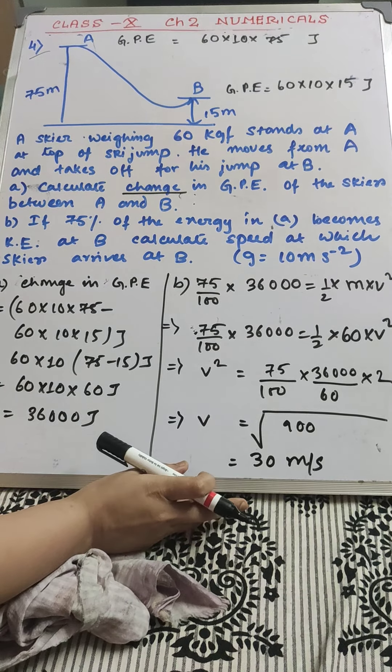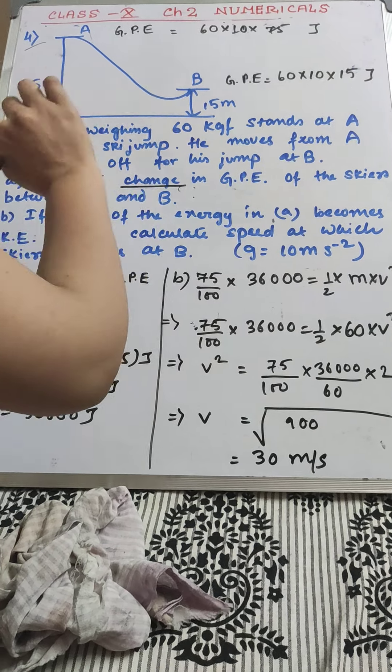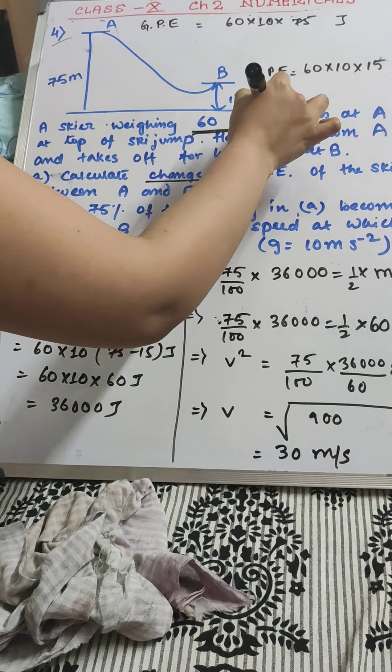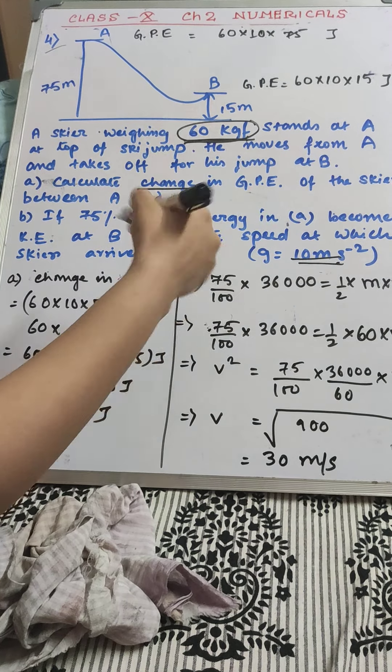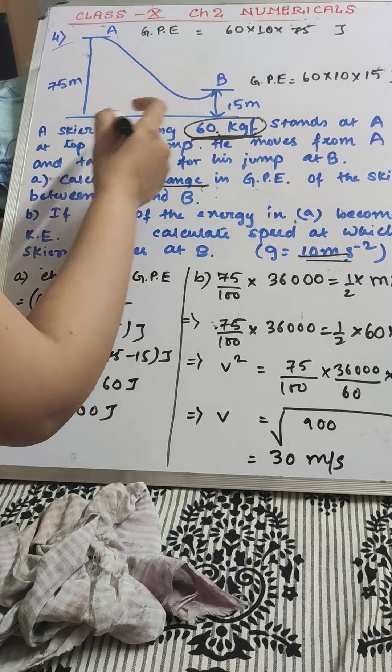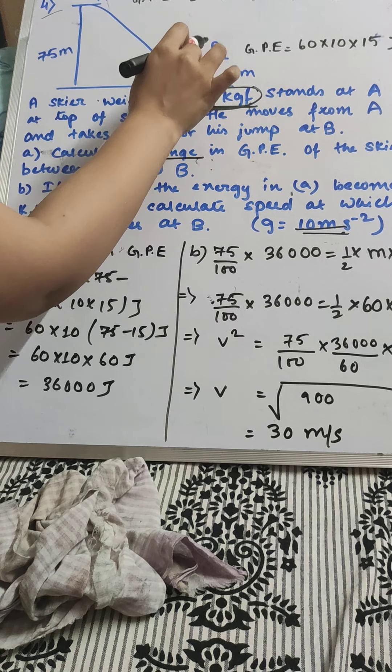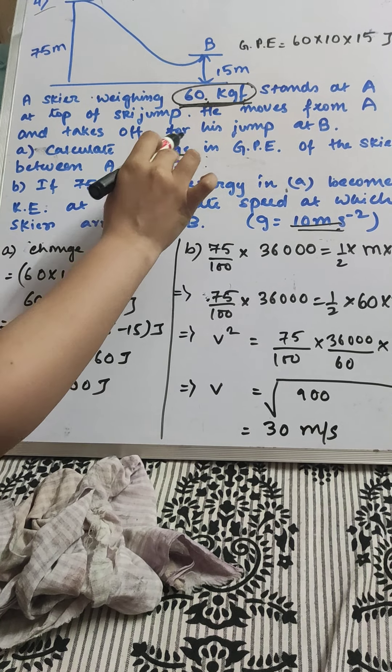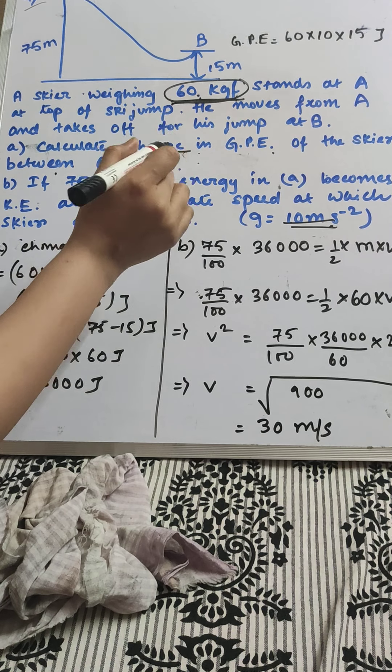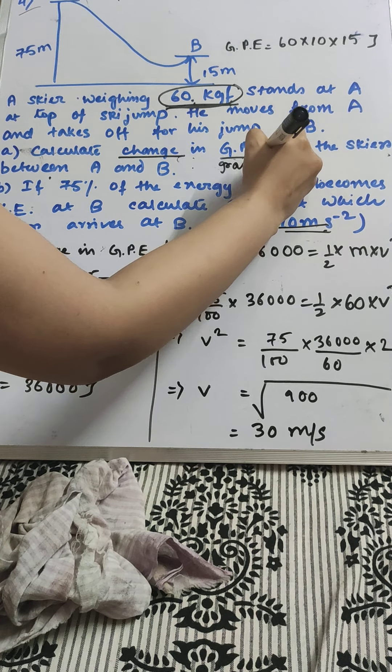Now, let's look at sum number 4. In this case, it is said that a skier weighing 60 kgf stands at A. One more thing: weighing 60 kgf means the mass is 60 kg. Weight is, you have to multiply this to make it a Newton. So, mass is specified here. This is basically the gravitational unit of force. A skier weighing 60 kgf stands at A at top of the sky jump. From here, he makes a jump and lands at B. Calculate the change in gravitational potential energy of the skier between A and B.